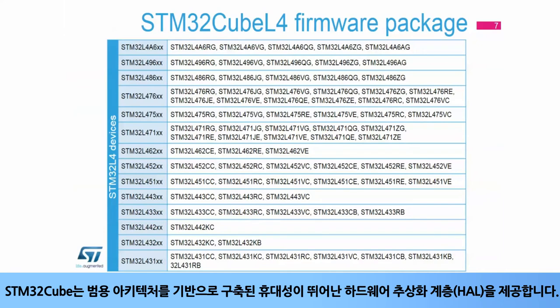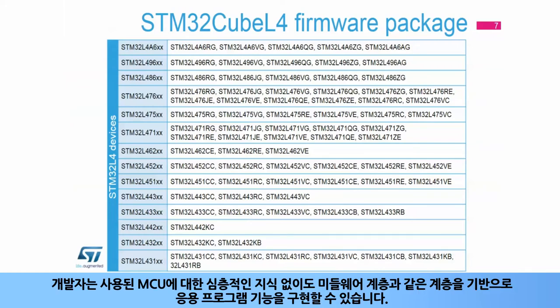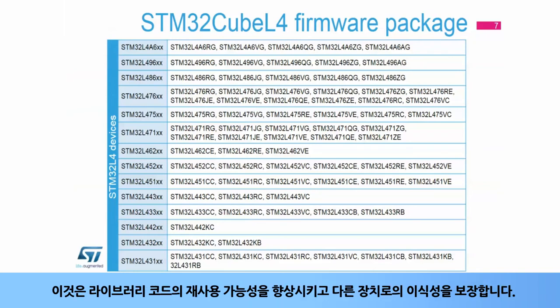STM32Cube L4 offers a highly portable hardware abstraction layer, or HAL, built around a generic architecture. It allows developers to implement application functions by building on layers, such as the middleware layer, without requiring any in-depth knowledge of the MCU used. This improves the reusability of the library code and guarantees easy portability to other devices.